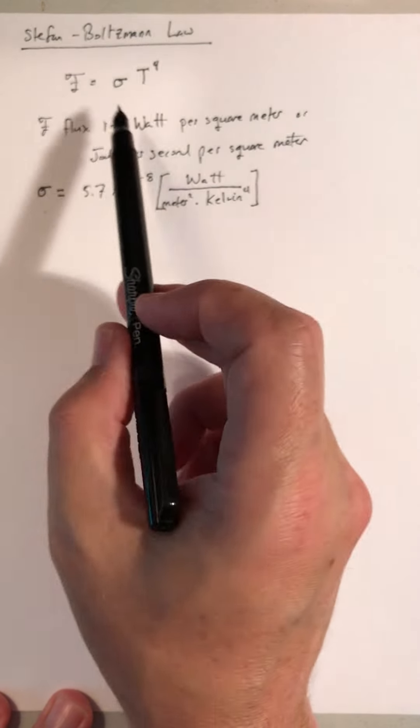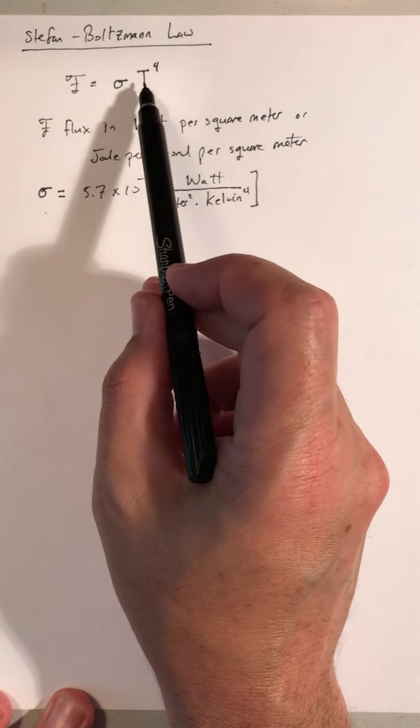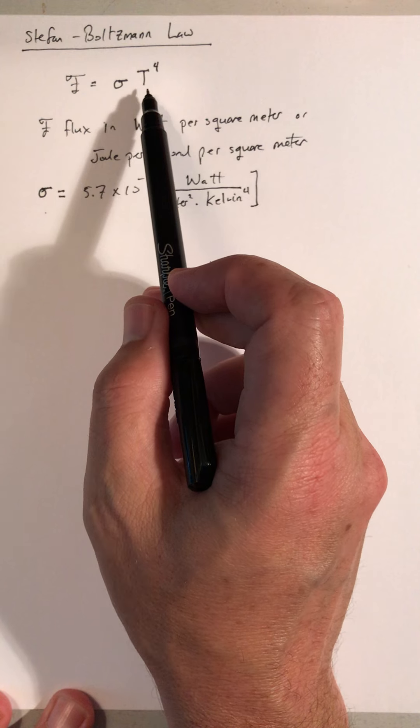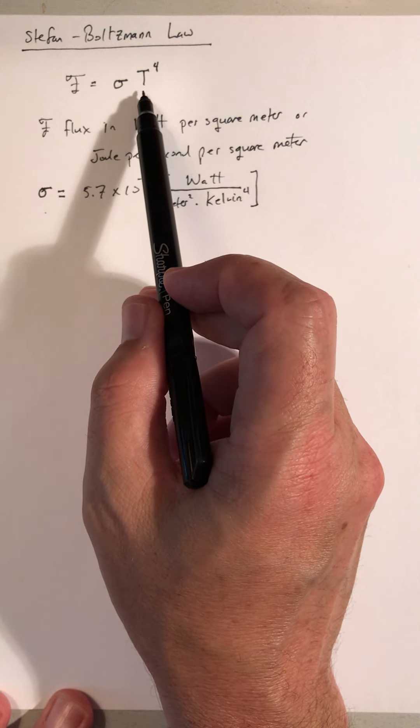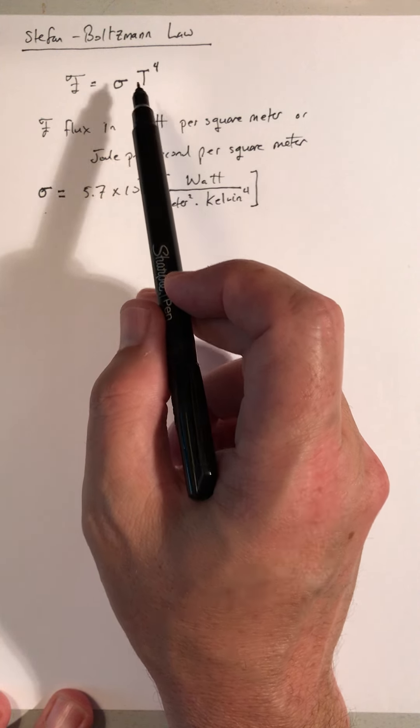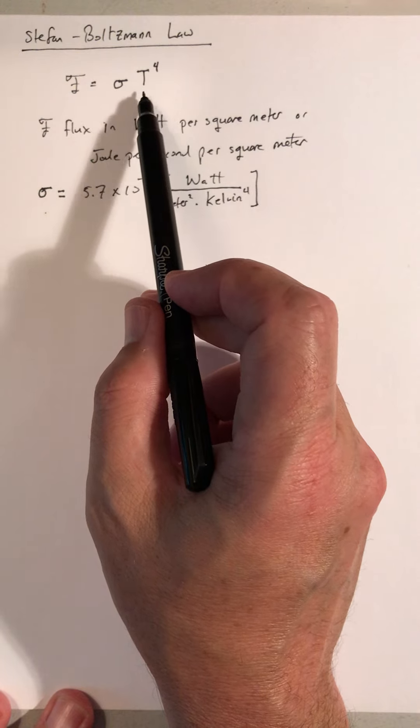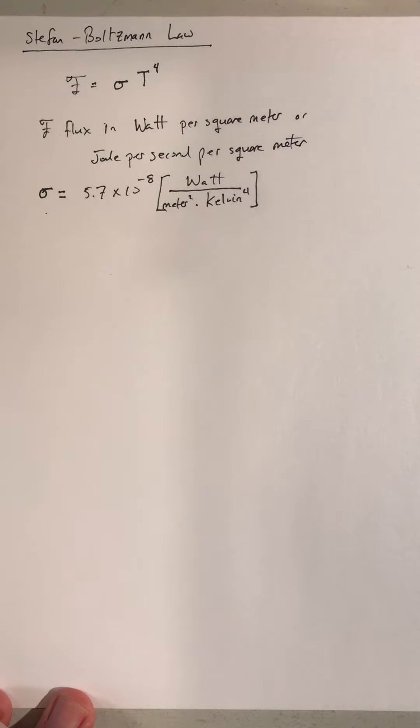And just as with Wien's law, we're only going to be dealing with temperatures in the Kelvin temperature scale. So everything is measured relative to absolute zero, which is zero Kelvin. So all temperatures are positive.